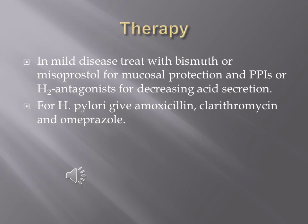In mild disease, treat with bismuth or misoprostol for mucosal protection, and proton pump inhibitors or H2 antagonists for decreasing acid secretion. For H. pylori, give amoxicillin, clarithromycin, and omeprazole to eliminate the organism.